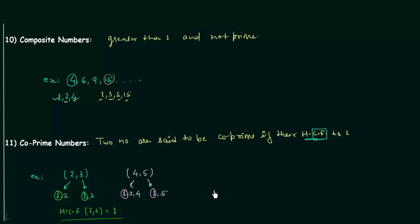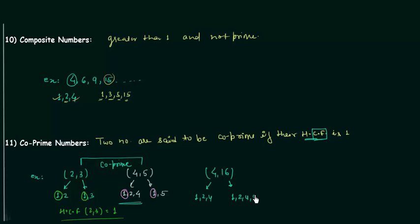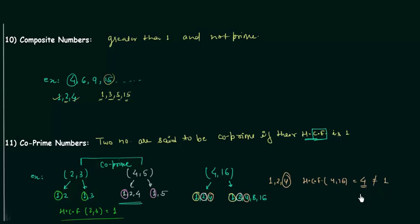Now let's see an example of numbers which are not co-prime: 4 and 16. The factors of 4 are 1, 2, and 4. The factors of 16 are 1, 2, 4, 8, and 16. The common factors are 1, 2, and 4. Out of these, 4 is the highest, so the HCF of 4 and 16 is 4. Since this is not equal to 1, 4 and 16 are not co-prime.